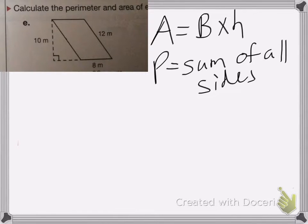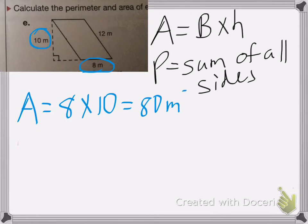So let's find the area first. Here's my base is 8, and my height is 10, because it's the perpendicular height. So my area is equal to 8 times 10, which is equal to 80 meters squared.